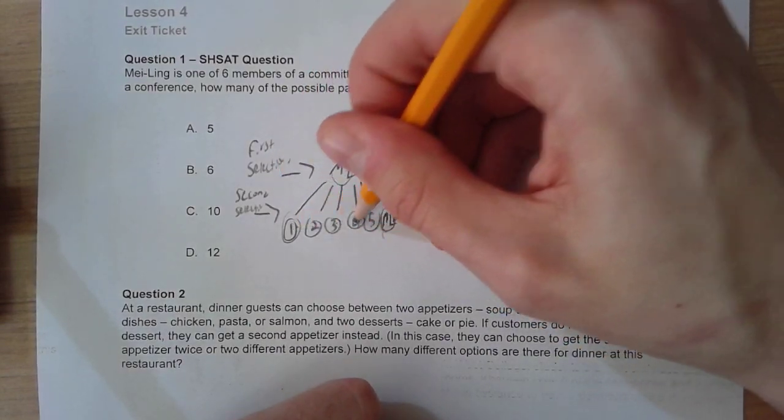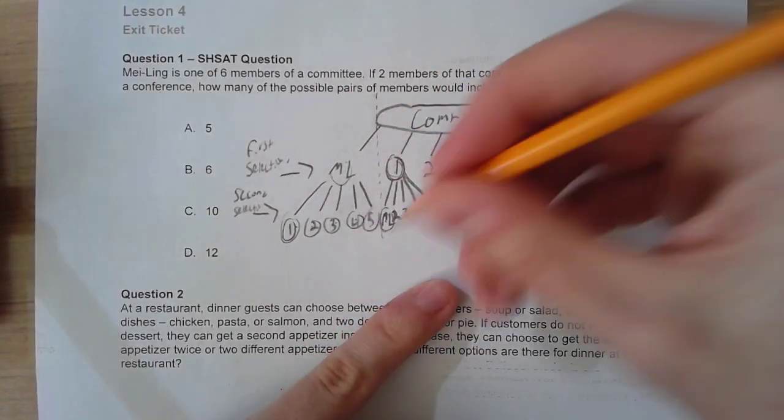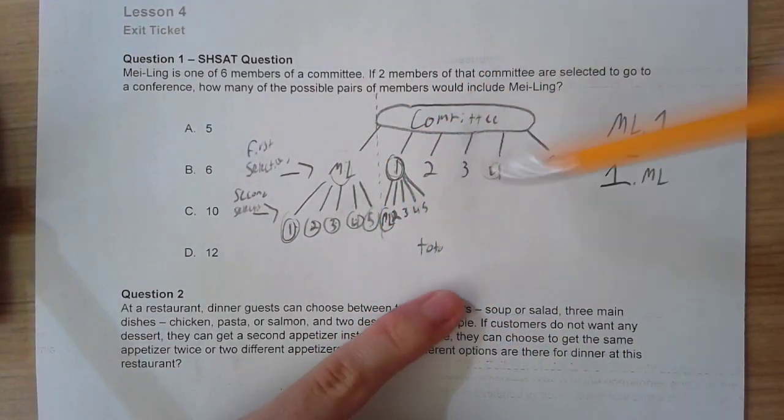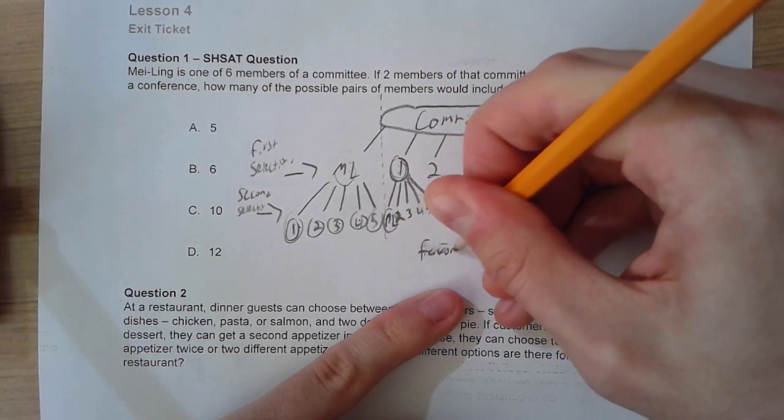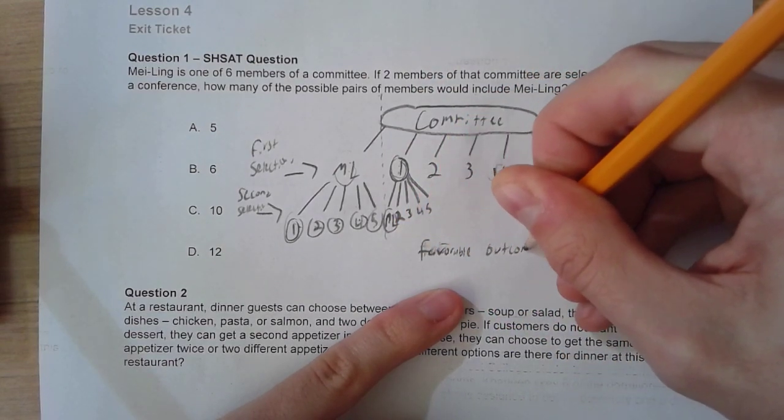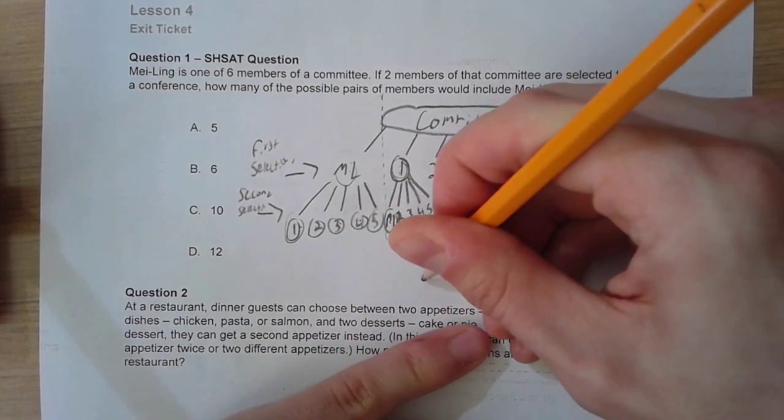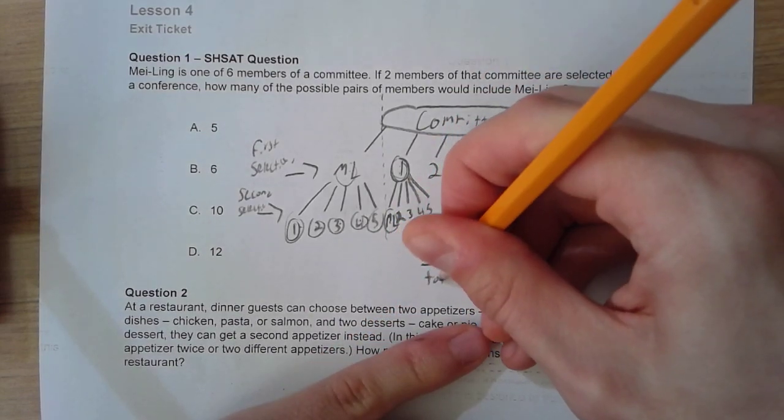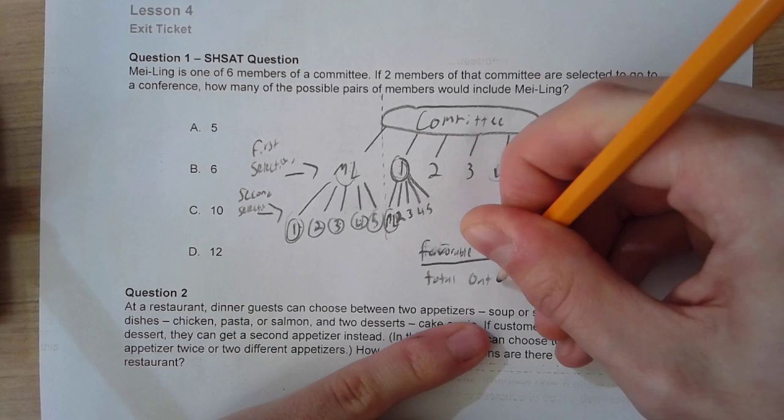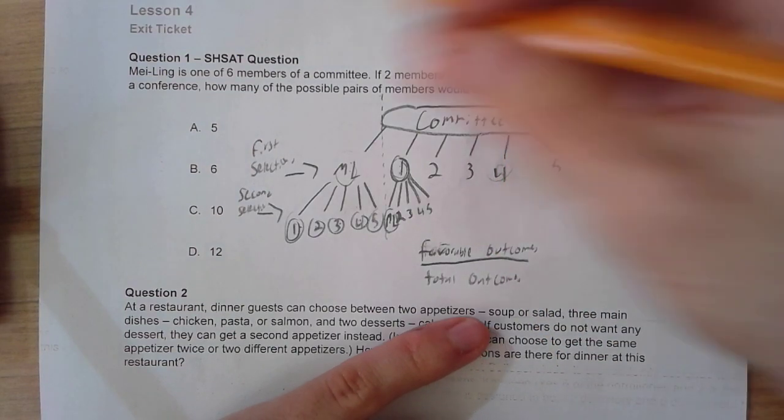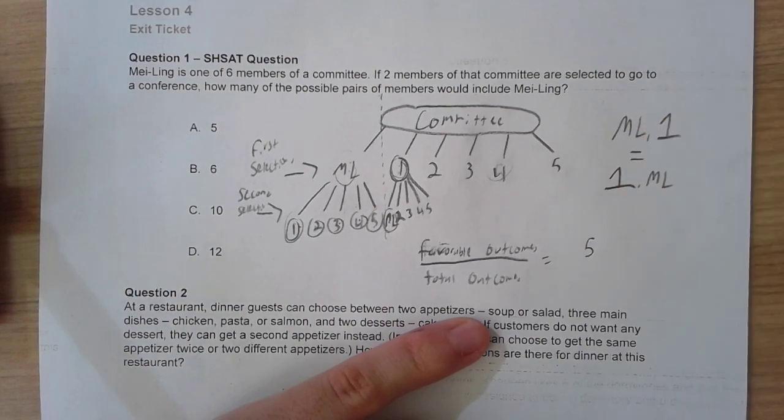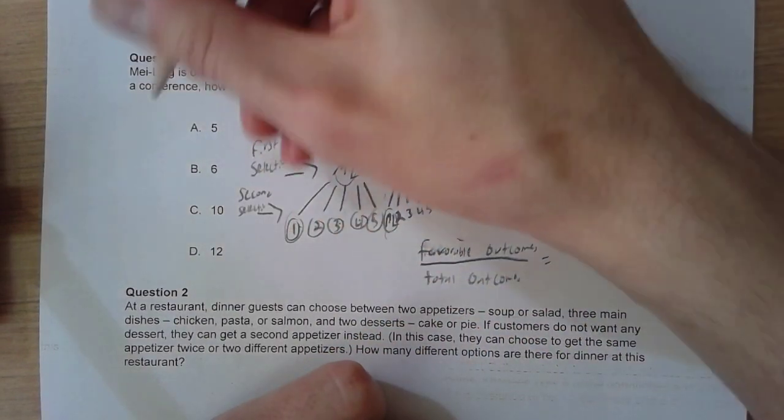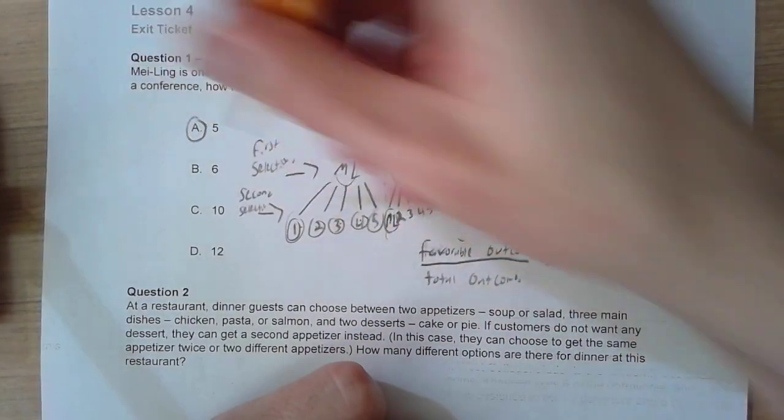So we have one, two, three, four, five total outcomes—not total outcomes, excuse me, favorable outcomes. Five favorable outcomes over total outcomes. That is going to be our probability. Five favorable outcomes, and that is going to get us our answer of answer choice A.